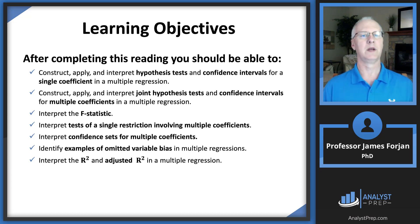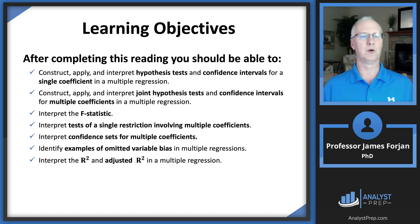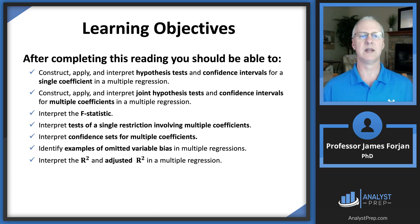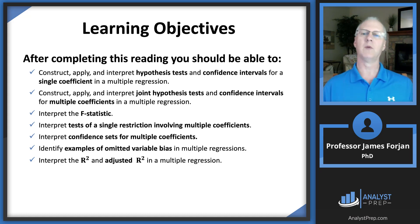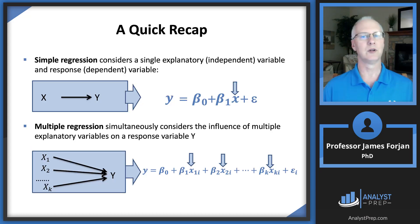The learning objectives include: construct, apply, and interpret hypothesis tests and confidence intervals — we've done that before. A joint hypothesis and confidence intervals for multiple coefficients is new, but we're extending prior hypothesis testing. The F-statistic has a slightly different meaning in multiple regression. We'll also cover multiple coefficients, confidence intervals, omitted variables, and R-squared and adjusted R-squared. These should be familiar topics; let's see how they apply in the multiple regression framework.